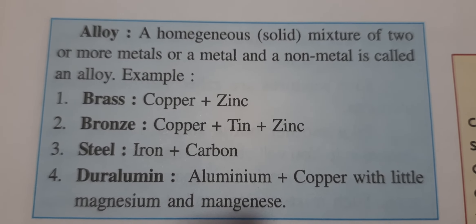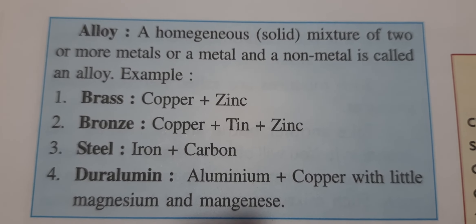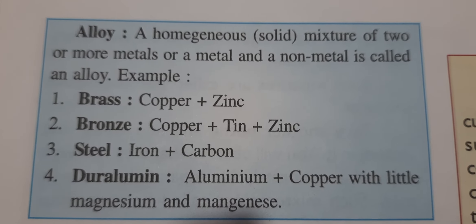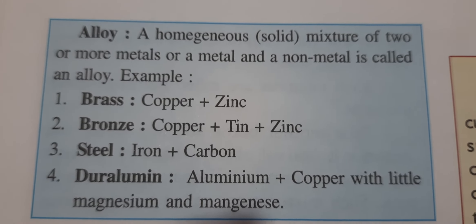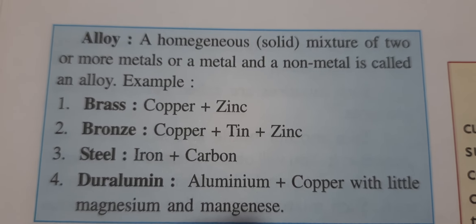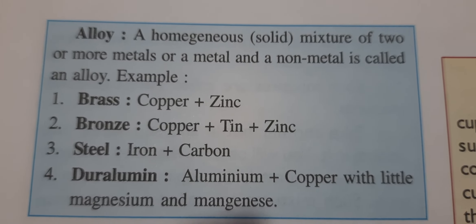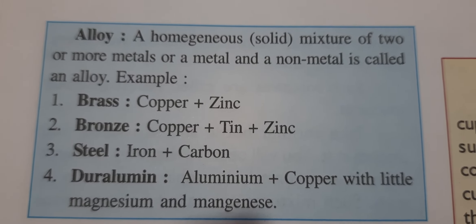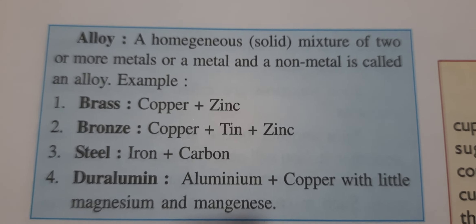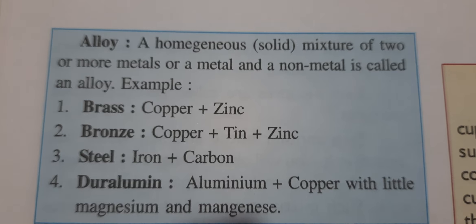Duralumin is a combination of aluminium and copper with little magnesium and manganese. So alloy means a combination of two metals, or a metal and a non-metal. I hope you understood what an alloy is. See you in the next video.